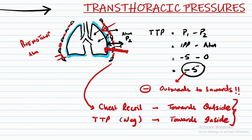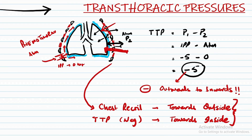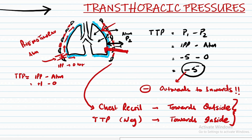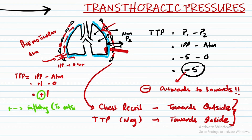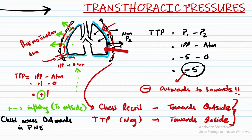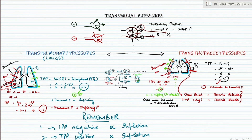If pneumothorax occurs and there is a puncture, atmospheric pressure is higher than intrapleural pressure, so air flows into the pleural cavity until intrapleural pressure becomes zero. At that point, the trans-thoracic transmural pressure becomes positive, meaning the net force moves from inside to outside — which is why the chest wall expands outward when pneumothorax happens. This is the basic concept of transmural pressures operating at the level of both the alveoli and the chest wall.